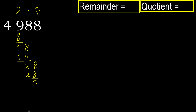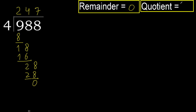That is not a number, therefore finish it. Ok, 0 — therefore 988 divided by 4 is done. Thank you.